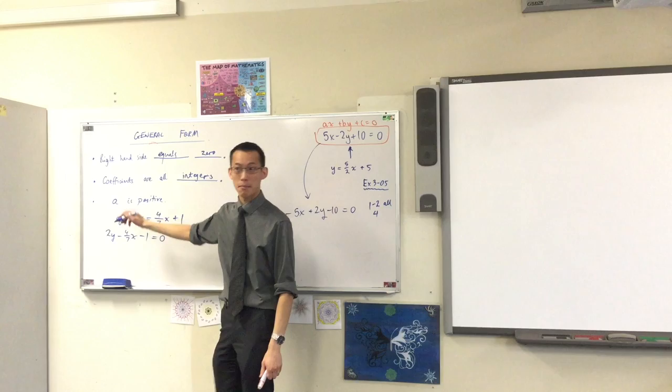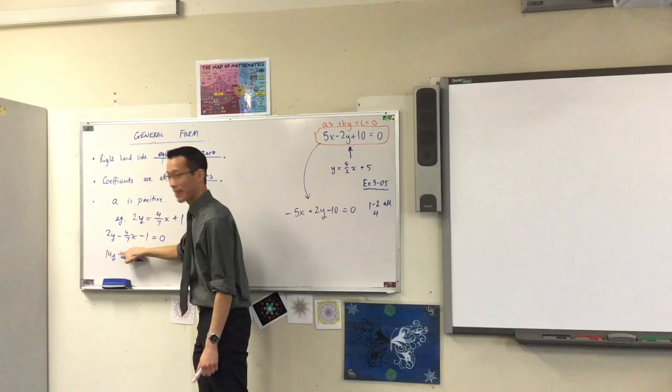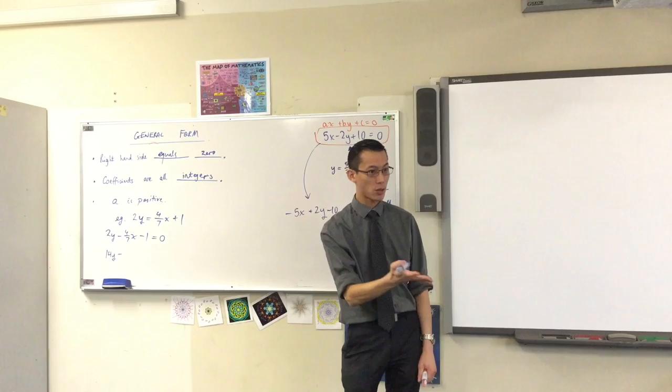2y is going to become? I'll get to the negative in a second. I'm going sort of one step at a time. The minus 4 over 7x will become? Minus 4x. What about this minus 1?